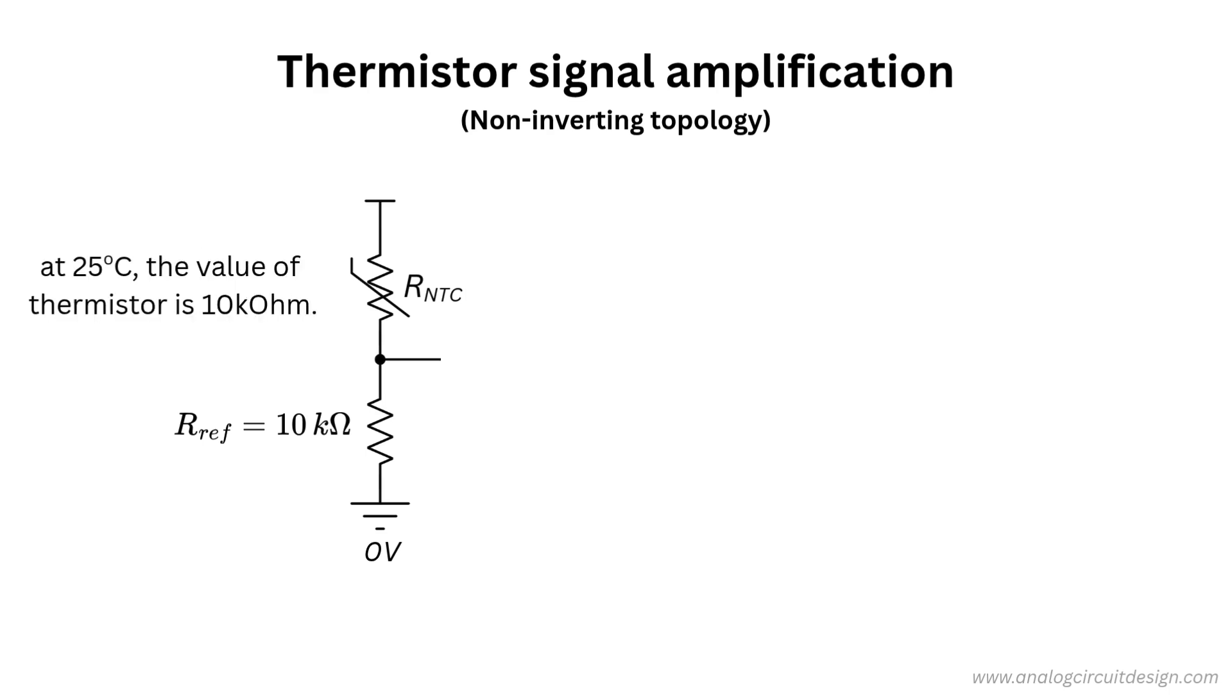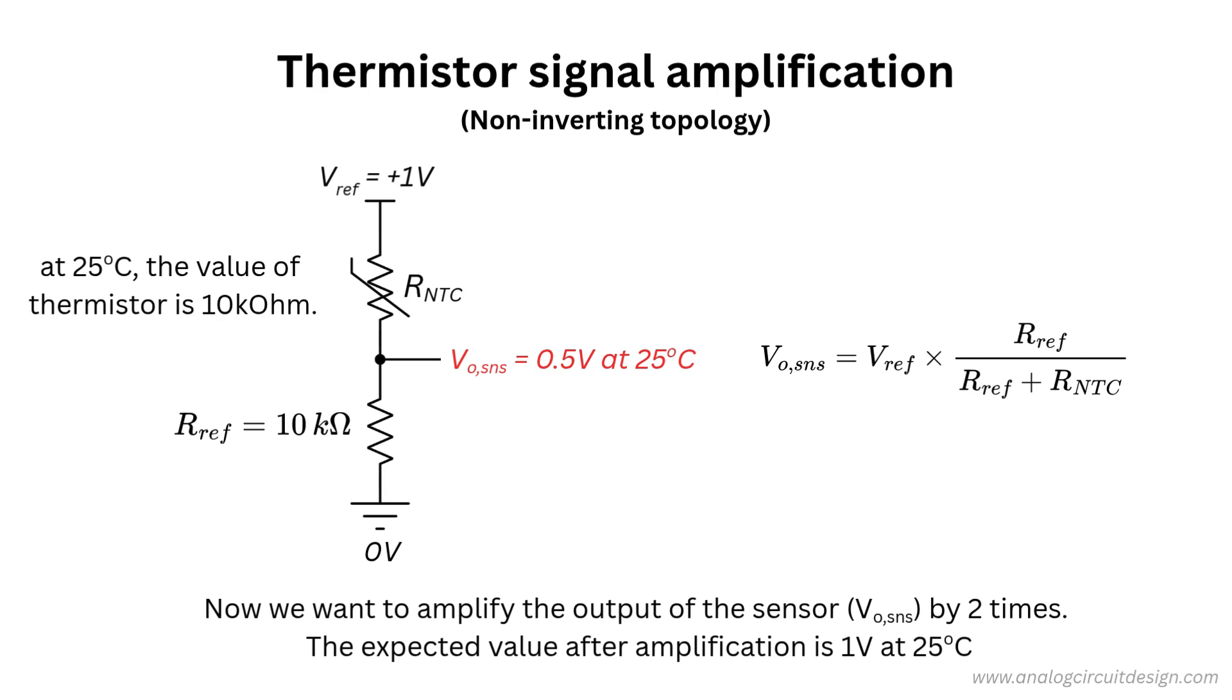At 25 degrees Celsius, the expected value of RNTC is 10 kilo-ohm. The reference voltage used is 1 volt. Using the voltage division rule, the voltage appearing at the output of this sensor should be 0.5 volt. Let's try to amplify this signal with a gain factor of 2. Expected output after amplification is 1 volt.